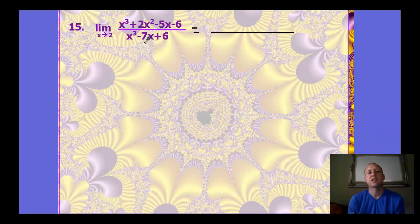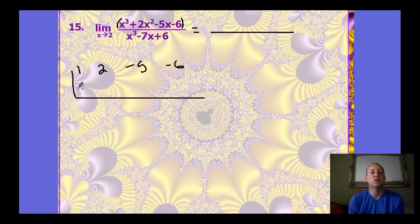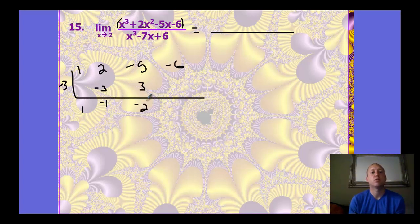We need to recall our factoring techniques. Grouping doesn't work here, so we can use our calculator to find the zeros of the graph and then use synthetic division. The coefficients are set up, and one of the zeros is negative 3. Dropping the 1, multiplying by −3, we work through the synthetic division and are left with x² − x − 2.